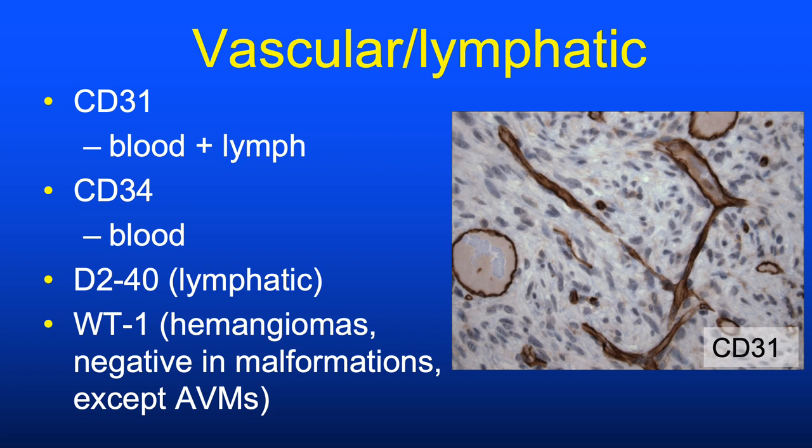CD34 is good for blood vessels. CD31 is a bit more sensitive because it highlights both blood and lymphatic channels. D2-40 is a lymphatic-specific marker, and Wilms tumor 1 (WT1) can be used to identify vascular neoplasms because they tend to be positive, whereas congenital vascular malformations are negative.